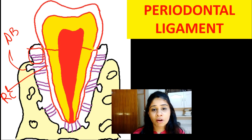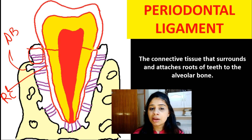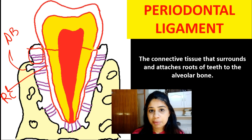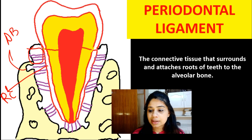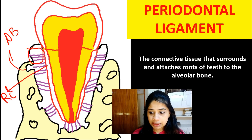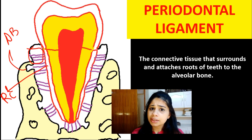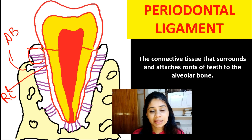Let's talk about the definition of the periodontal ligament. The glossary of periodontal terms defines the periodontal ligament as a connective tissue that surrounds and attaches the root of the teeth to the alveolar bone. It's a very simple definition, but let's break it down.